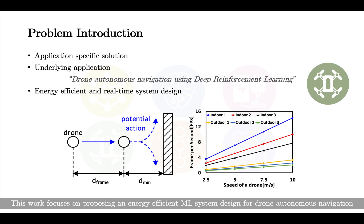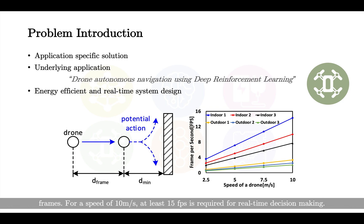This work focuses on proposing an energy-efficient ML system design for drone autonomous navigation using deep reinforcement learning. The speed of the drone depends on how fast it can process single image frames. For a speed of 10 meters per second, at least 15 fps is required for real-time decision making.